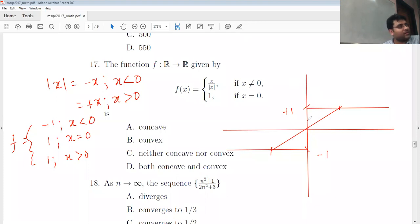So in a particular region it is concave, in a particular region it's convex, so it's neither. As I showed you in the last class, when you join any two points, the curve has to be above the line for concave.